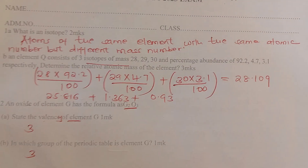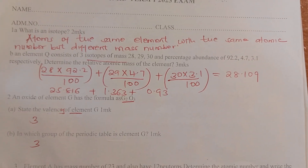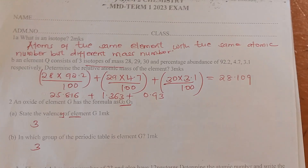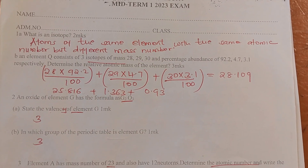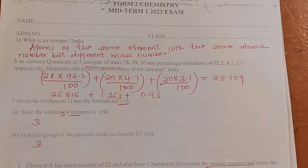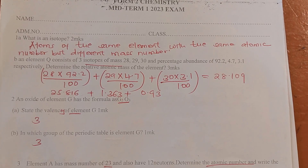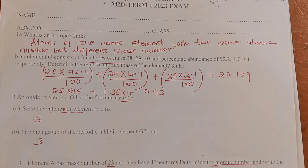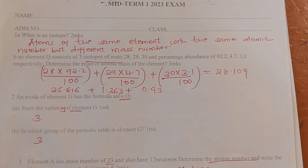Atoms of the same element have the same atomic number but different mass numbers — these are isotopes. Element Q has three isotopes with mass numbers 28, 29, and 30, and percentage abundances of 92.2%, 4.7%, and 3.1% respectively. Determine the relative atomic mass of the element.